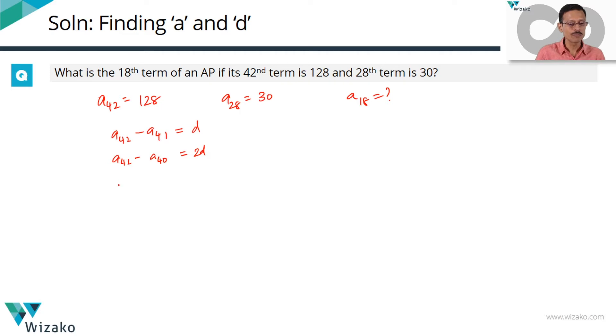So just extrapolate it: between A42 and A28, how many common differences will be there? 42 minus 40 is 2, so two common differences. 42 minus 28 is 14, so you will see 14 common differences between the 42nd and the 28th term.